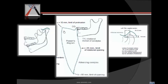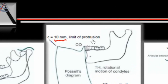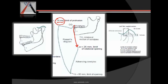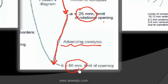In this diagram we see some values which are important in MCQs. 10 mm is the limit of protrusion — if you try to protrude your jaw, you will not be able to protrude more than 10 mm. When you start opening your jaw from centric occlusion, the initial motion is by simple rotation of the condyle at its axis — this is 25 mm, the rotational opening. After which, further opening is not possible without a shift of the condyle. After this shift, the mandible continues to open with the advancing condyle, and the total limit of opening is 50 mm.